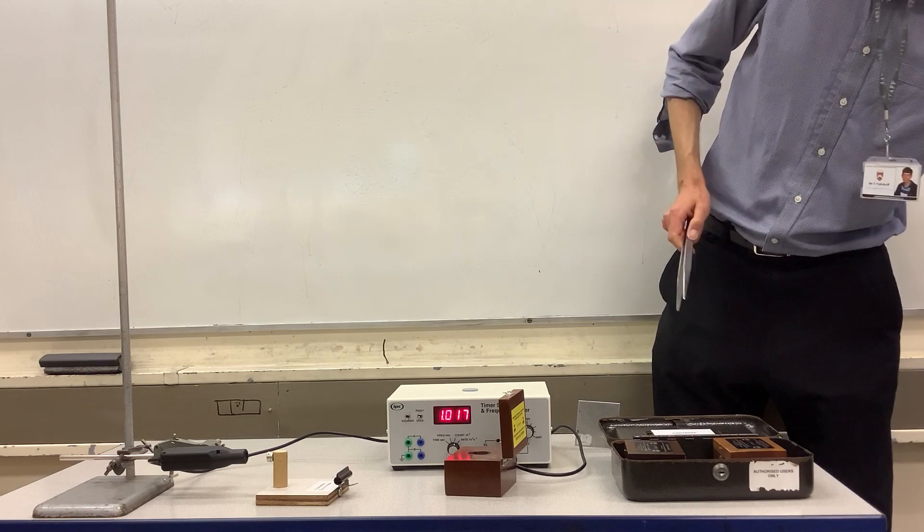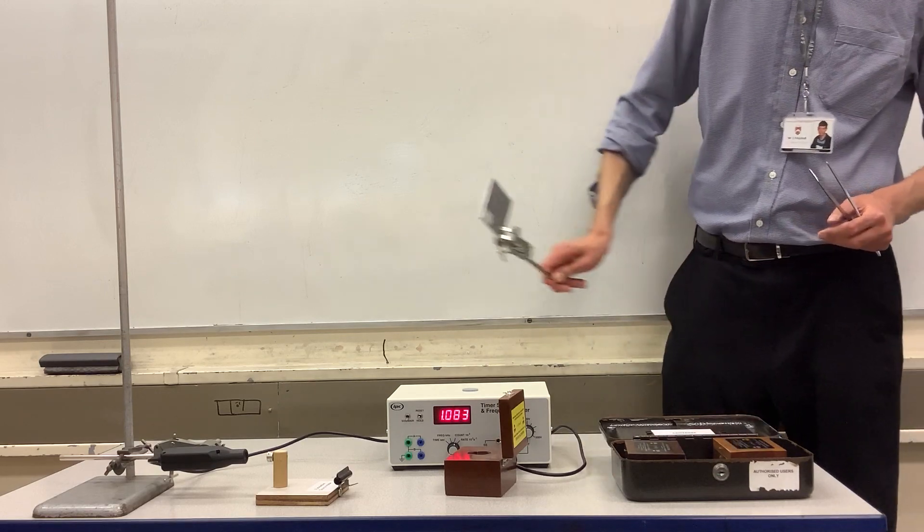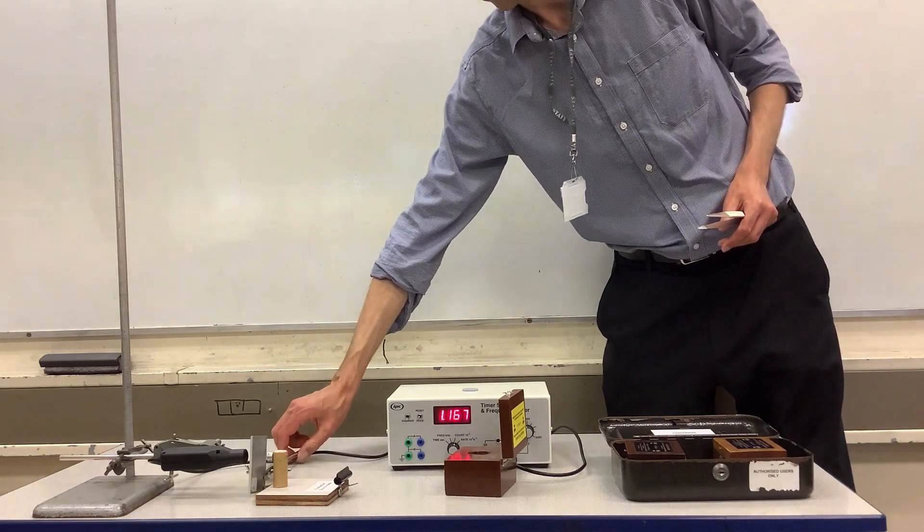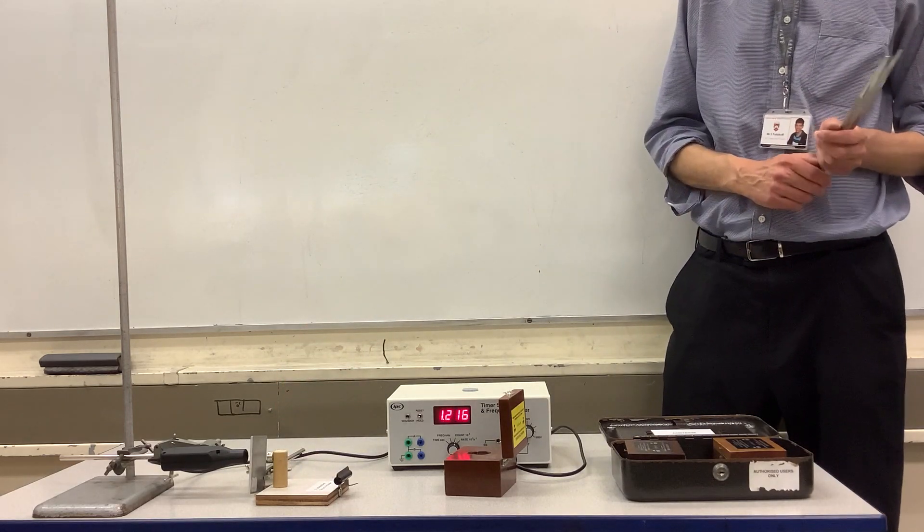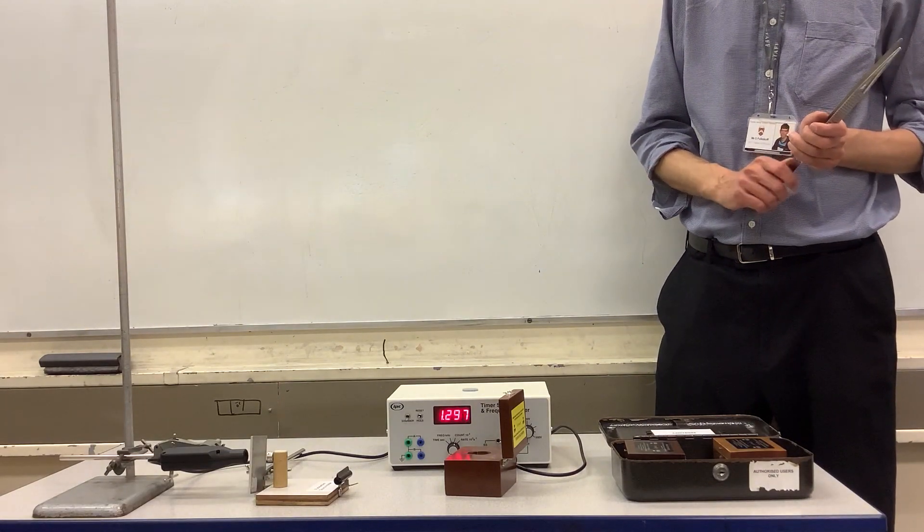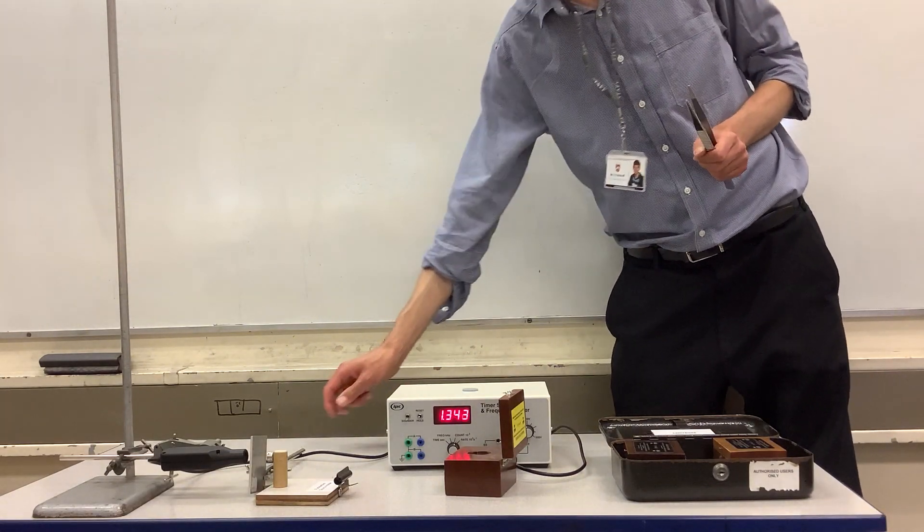What about aluminium? A few millimeters of aluminium stopped the beta radiation, but if I put the same piece of aluminium in between, the gamma radiation passes through the aluminium almost as if it wasn't there.